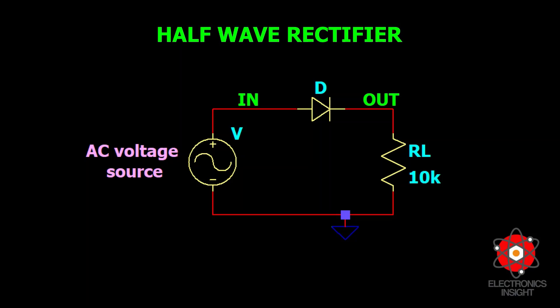A rectifier basically converts an AC voltage source to a DC signal. It may be a single-phase circuit or a polyphase circuit. When power requirement is low, a single-phase rectifier is sufficient, and only for high power requirements are polyphase rectifiers more suitable.